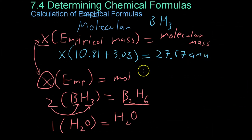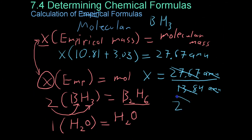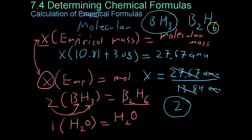Now, if you solve for x, you get 27.67 amu over 13.84 amu. And when you simplify, you figure out that x is a unitless coefficient of 2, which makes sense because, as I discussed earlier, diborane has an empirical formula of BH3. However, its actual molecular formula is B2H6.